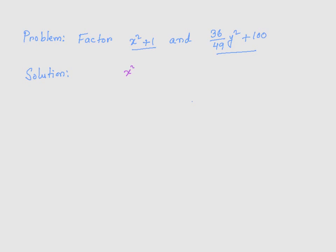These binomials, x squared plus 1 and this one, 36 over 49 y squared plus 100, they actually cannot be factored because they are primes. So if you have something that could be written in the form x squared plus a squared, you cannot factor it. It's a prime, so we call it prime.